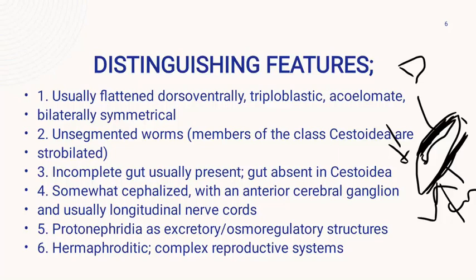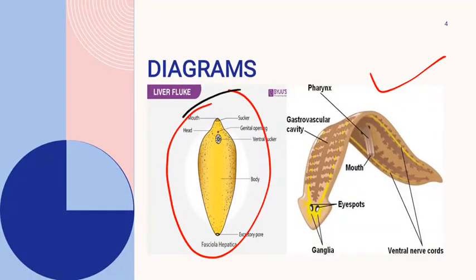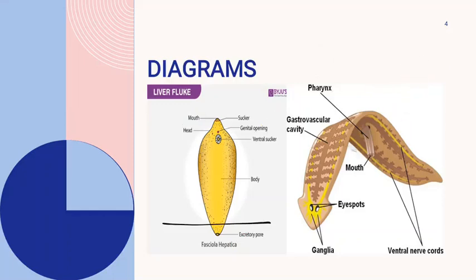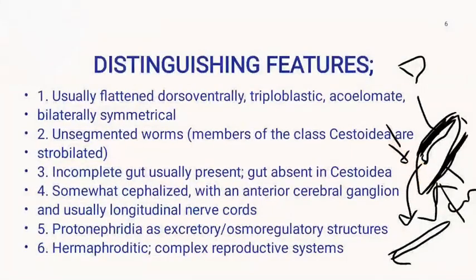They are dorso-ventrally compressed animals — pressure is applied from the dorsal and ventral sides, and this leads to the formation of the animal into a thin sheet, making them flatworms. Moving on to the next distinguishing feature, these are unsegmented worms. There are no segments found in the body of Platyhelminthes, as you can see in this diagram — their body is whole, with no divisions or segments present.